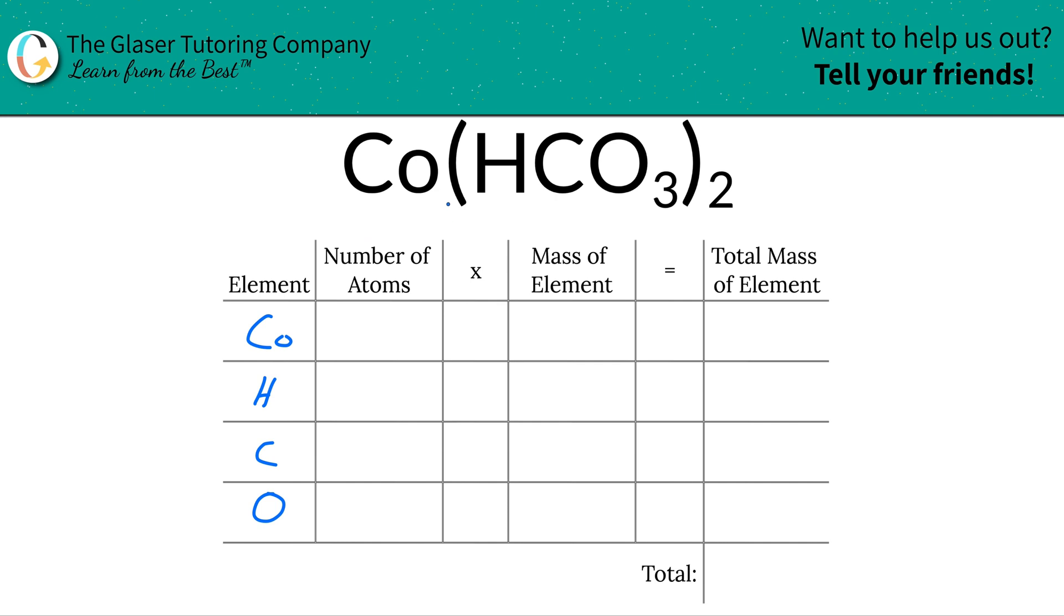Next is to then write down the number of atoms of each element, and that's where the subscripts come into play. So for cobalt, there's an invisible one there at the bottom, so that means that there's one cobalt atom.